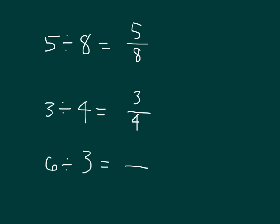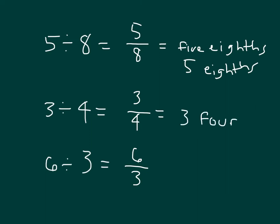Can you do that last one? As a fraction, it is six over three. We can also read this as five over eight, which is five eighths. Or five eighths, like this here. We can read this as three, three what? Fourths. And this, six divided by three, is six thirds.